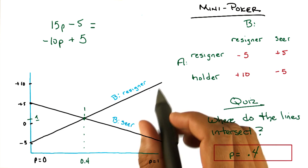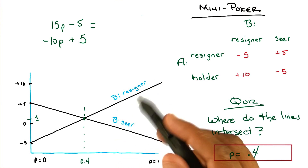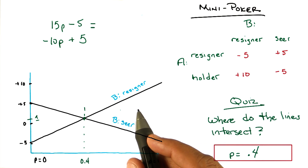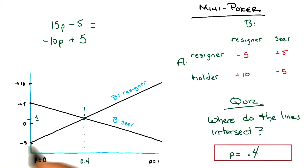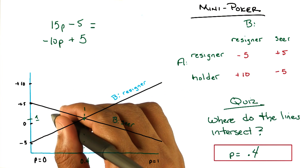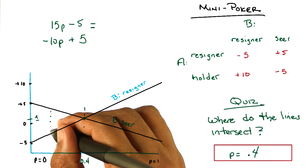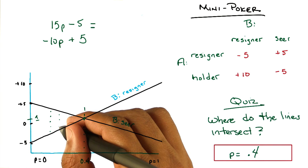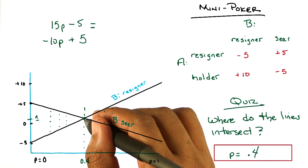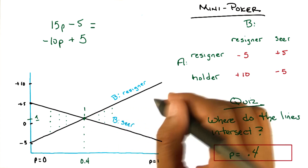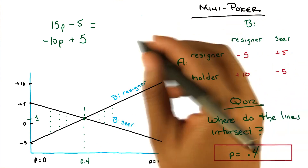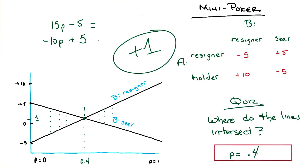So in fact, if B tries to do a mixed strategy between these two lines, for every single point between the two lines the average is going to be somewhere in between there, no matter how you weight that average. It's like a bow tie is the space of possible payoffs. And since those two lines cross, no matter what mixed strategy B chooses, on average we will end up here. So the value of this game is plus 1 for A.